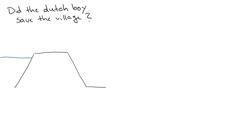The example I want to use is whether the Dutch boy did save the village. The story goes that a hole developed in the dike at the time when the dike was flooding, and we would have a conduit here with a radius r which permits flow of water out of the dike.